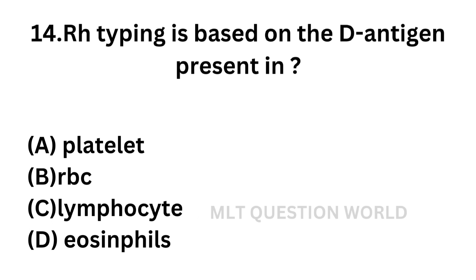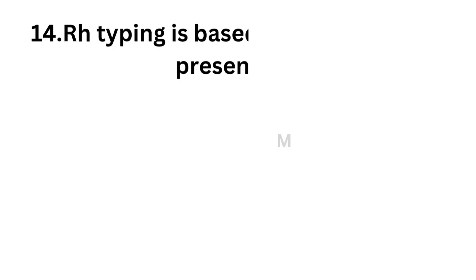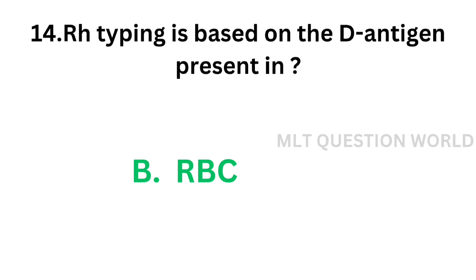Question number 14: RH typing is based on the D antigen present in. Option A: Platelet. Option B: RBC. Option C: Lymphocyte. Option D: Eosinophils. RH typing is based on the D antigen present in RBC. The correct answer is option B: RBC.